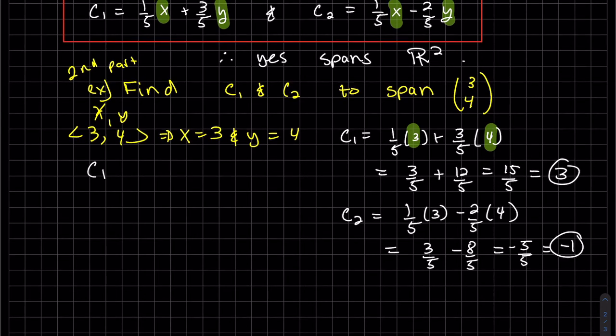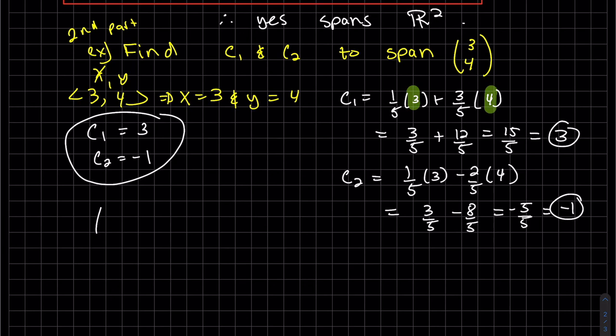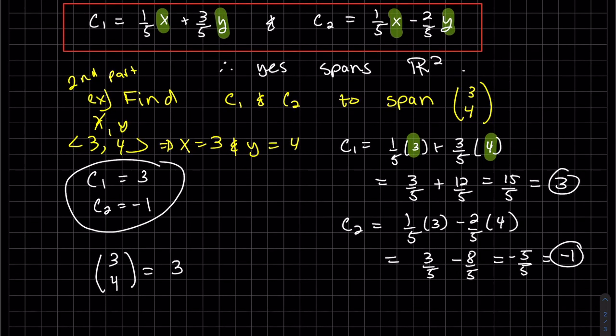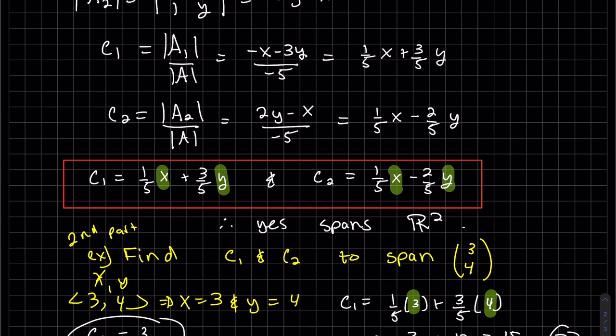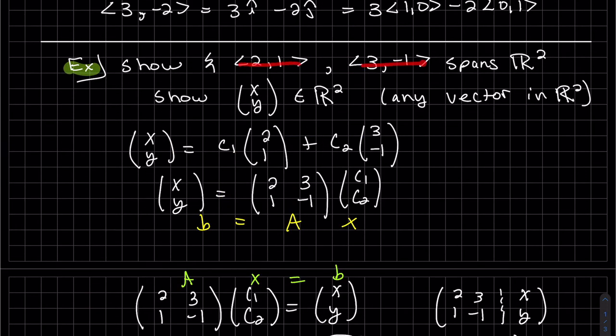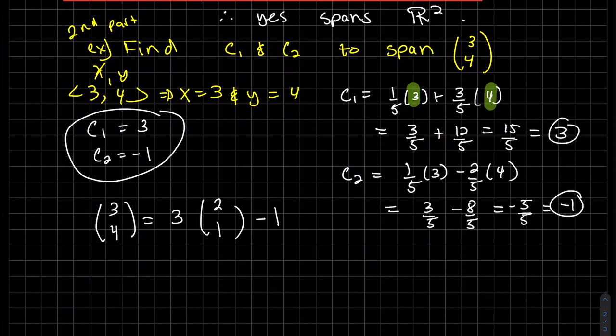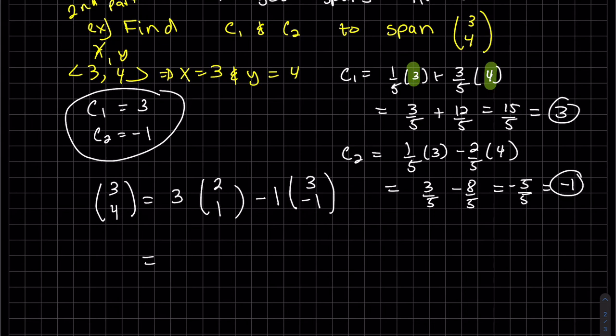So we get C₁ is equal to 3, C₂ equals minus 1. And so our linear combination of 3, 4 is 3 times our first vector, 2, 1. It goes way up there. 2, 1 and 3 minus 1. Minus 1 times 3 minus 1. So let's work that out to make sure that they're equal.